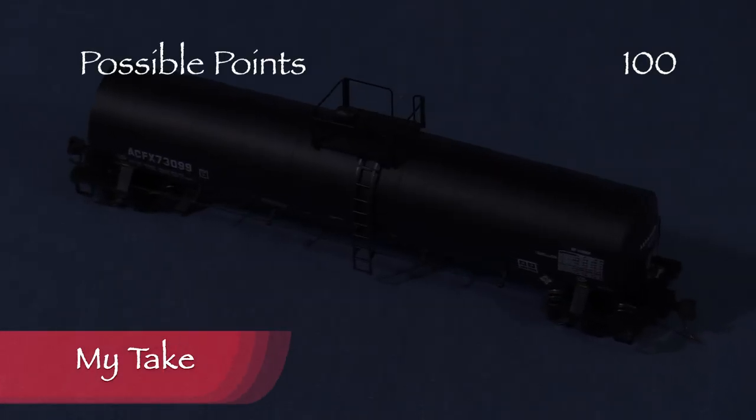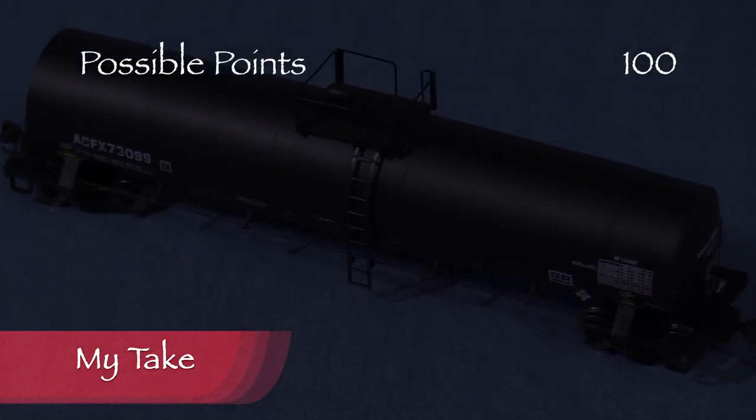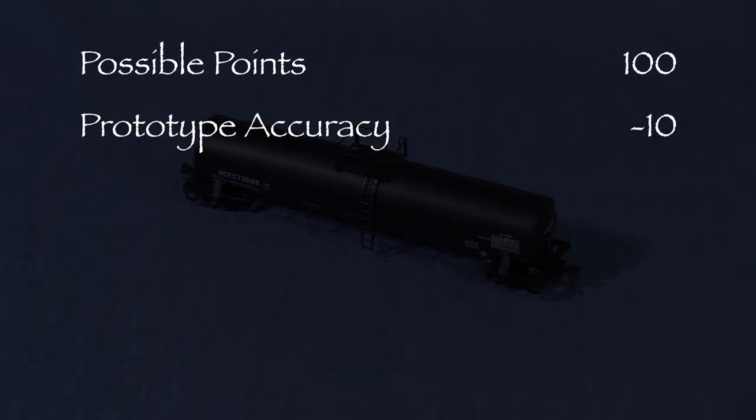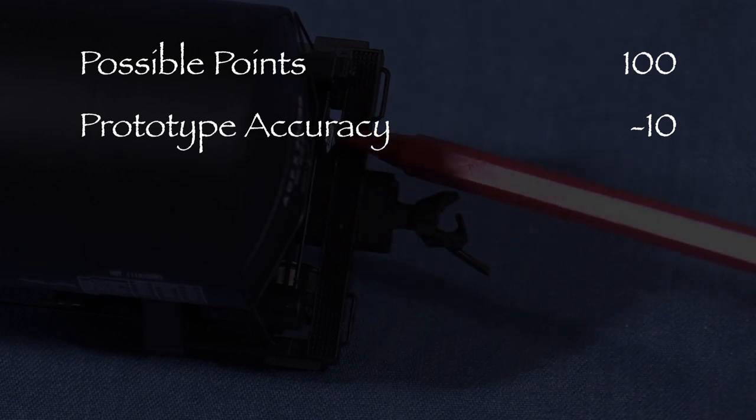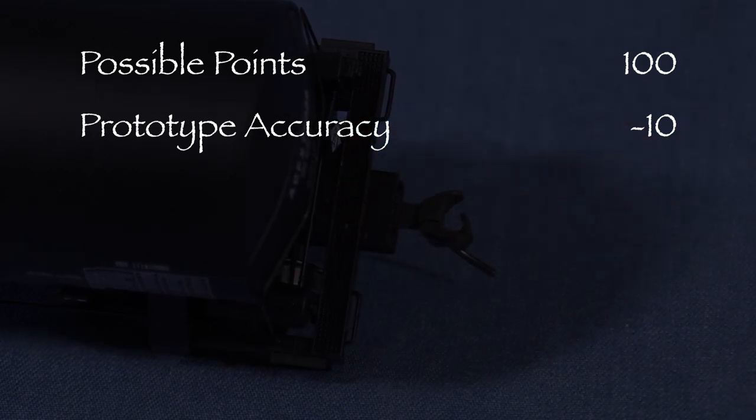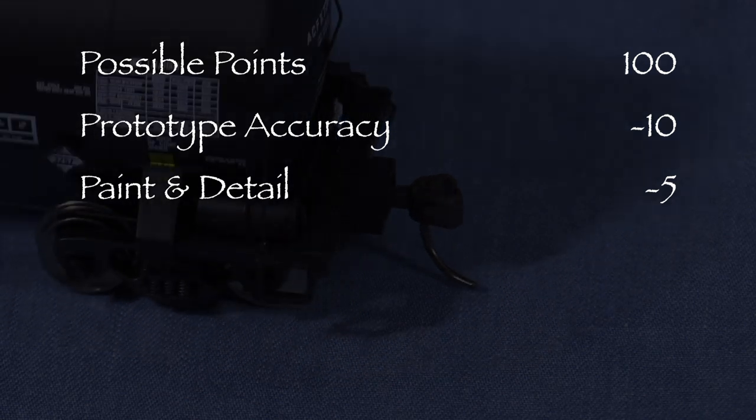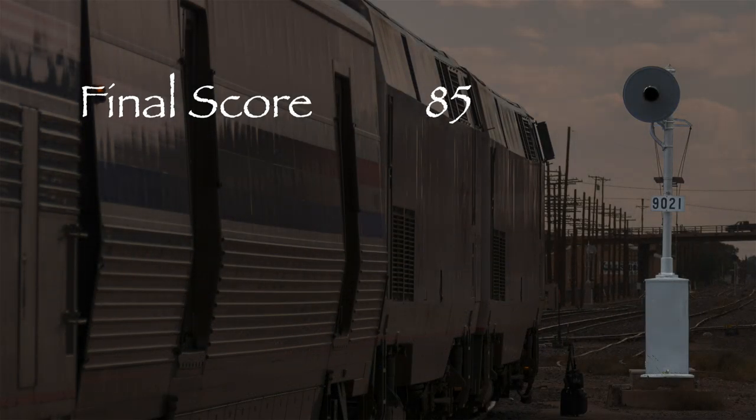Let's see what we've got. The body style and paint job are incorrect for this prototype car so I took 10 points in the prototype accuracy category. The model lacks details that some other comparable models in this price range have, so I took 5 points in the paint and detail category. That leaves us with 85 out of 100 possible points, which would be a B on a report card.